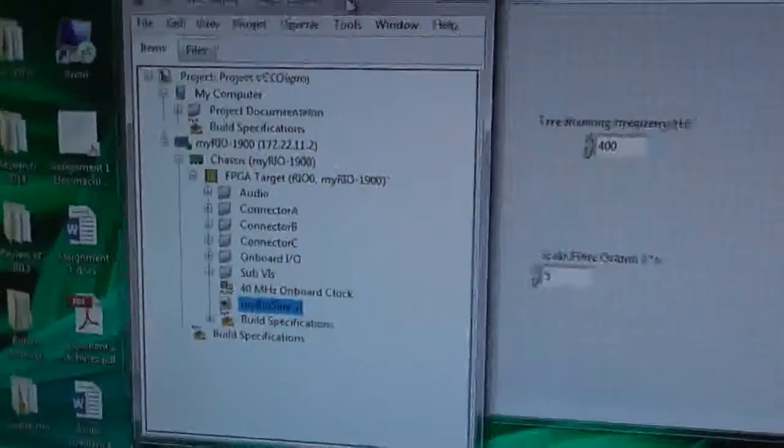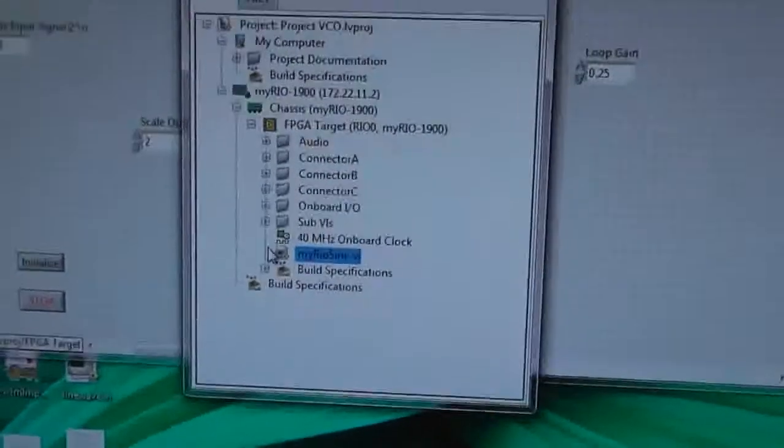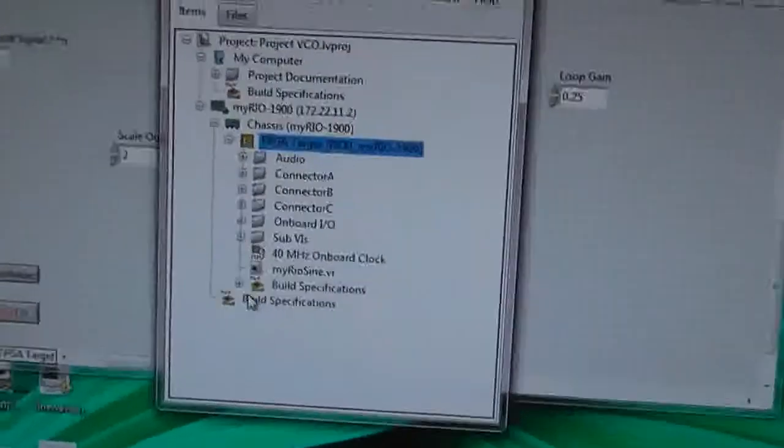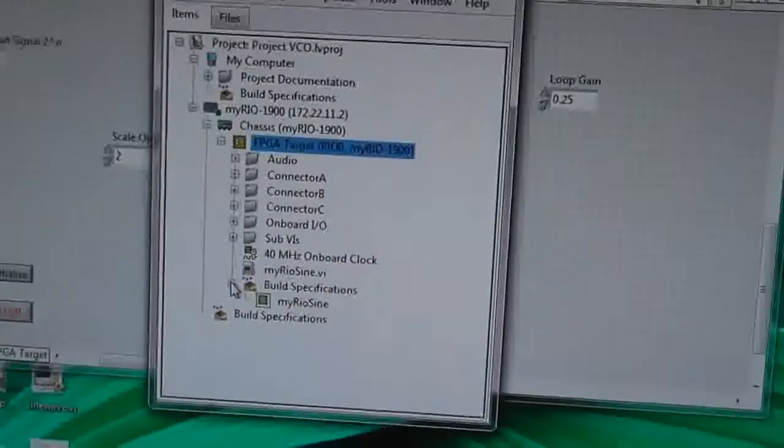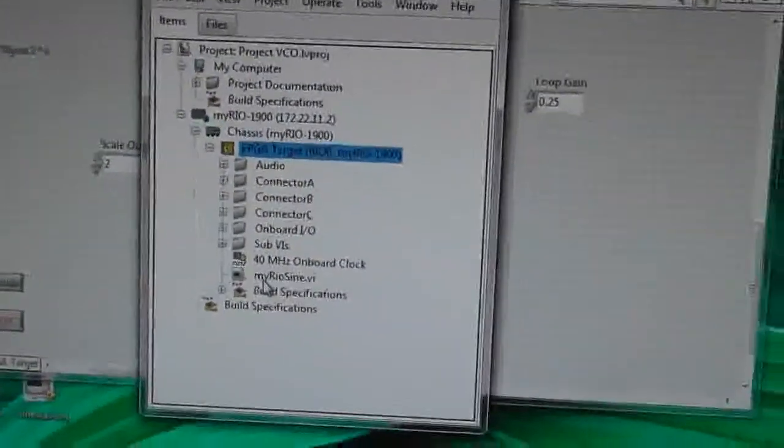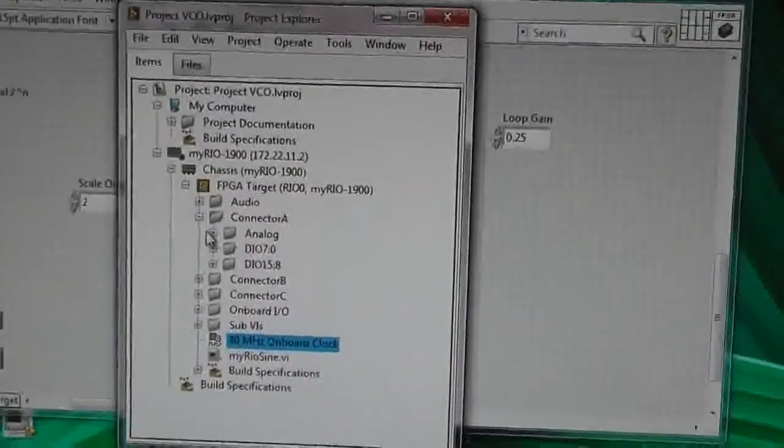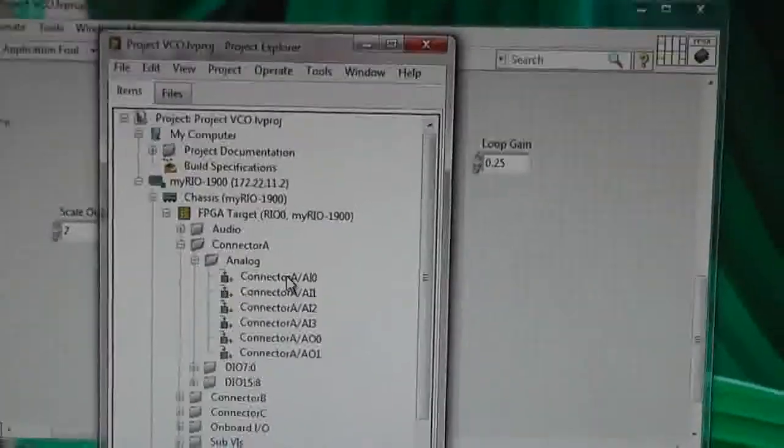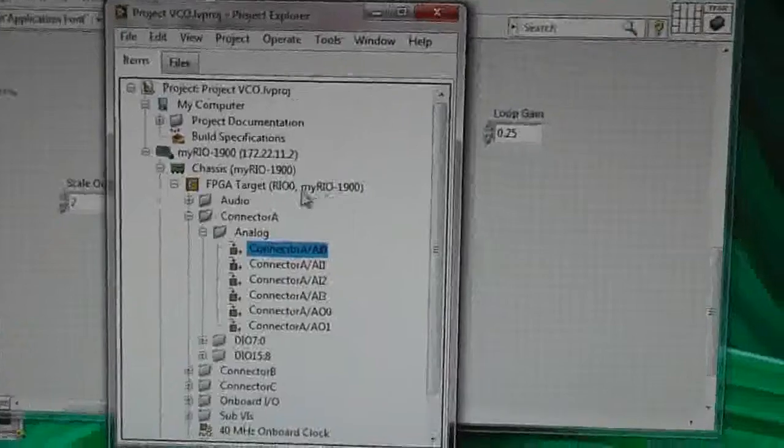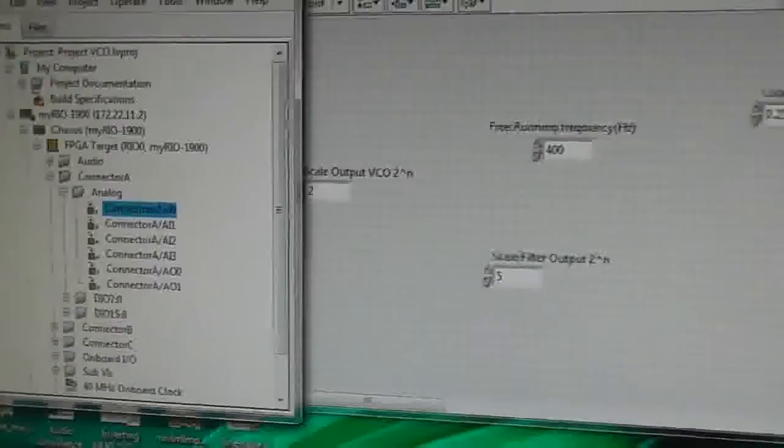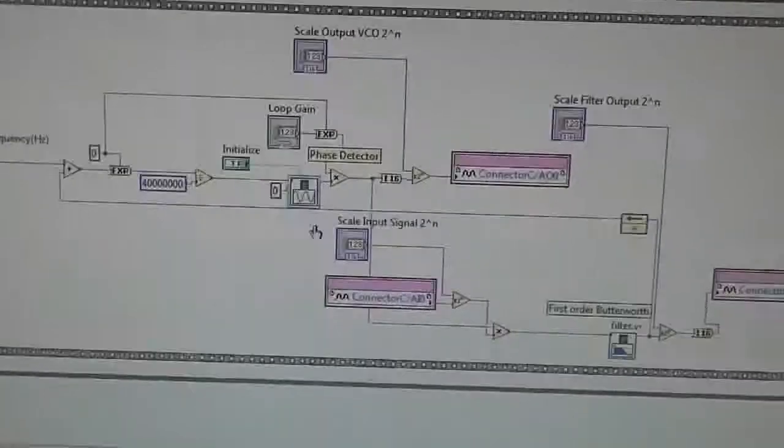If we go and look at the project setup of the MyRio, you can see that's my VI, it's under the FPGA part. I don't have any processor work here, it's just the FPGA, 40 megahertz clock. Here's the connectors. I can use any, I can pull across any connector, for example analog input zero, I could just drag that onto the, in LabVIEW, and that becomes an input.